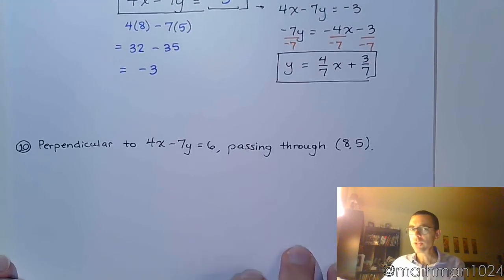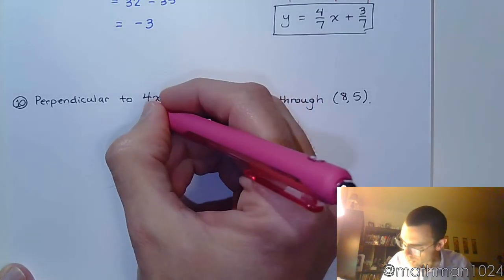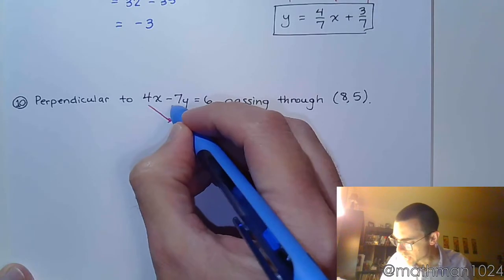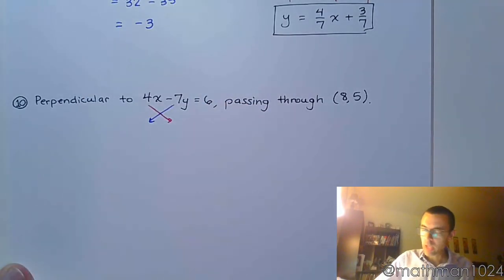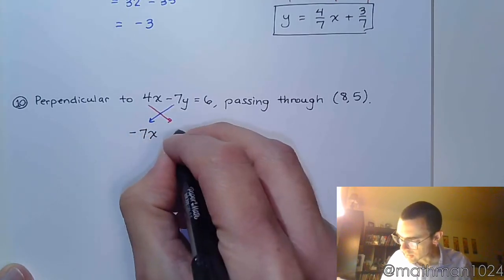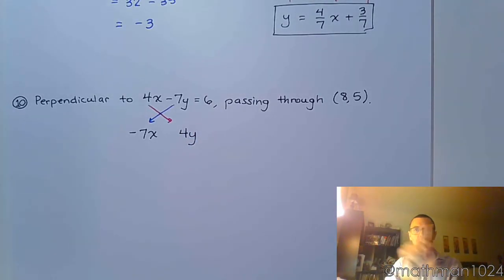Same thing that we just did, but now I want it to be perpendicular. So to be perpendicular, I said to criss-cross these coefficients. Swap these guys out. Now when I do that, this becomes negative 7x and that becomes 4y. So that's just criss-crossing those coefficients.